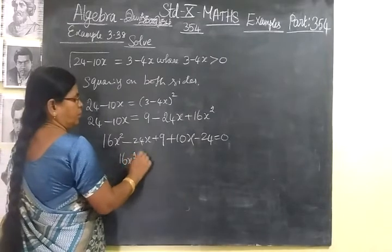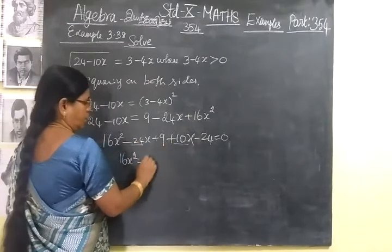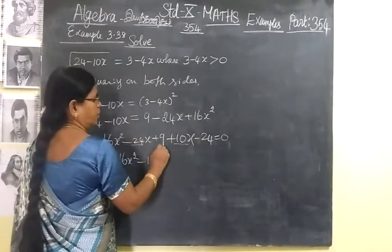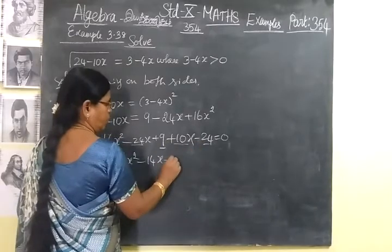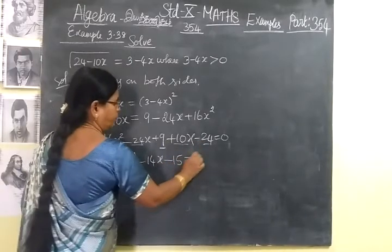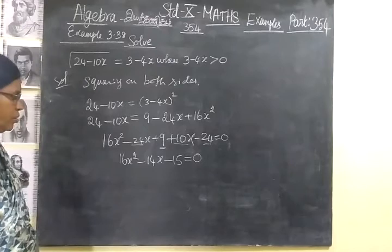So 16x² minus 24 plus 10 is minus 14x, then 9 minus 24 is minus 15 equal to 0.